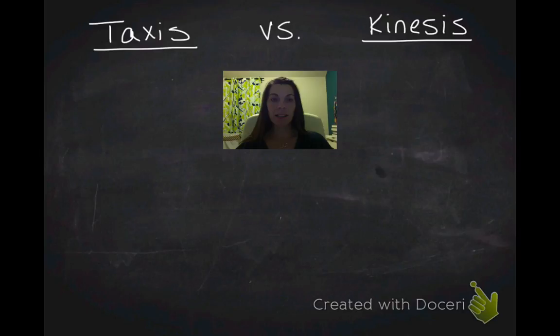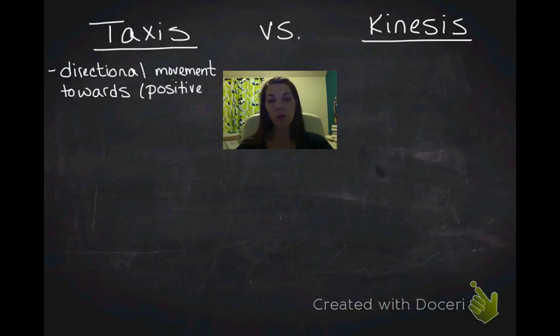So, taxis, or plural is taxis, is a directional movement towards or away from a particular stimulus. If we're moving towards a particular stimulus, we would say it's a positive taxis, and if we're moving away from a particular stimulus, we would say it's a negative taxis.